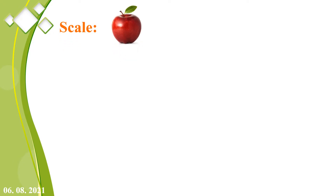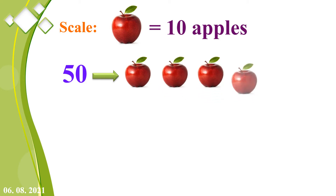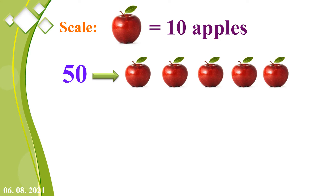Let us understand with one example. Here 1 apple equals 10 apples. So for 50, we calculate 50 divided by 10 equals 5, so we draw 5 apples: 1, 2, 3, 4, and 5. Because 1 apple equals 10 apples, 5 apples means 5 into 10, which is 50.